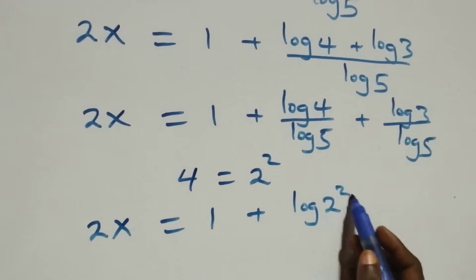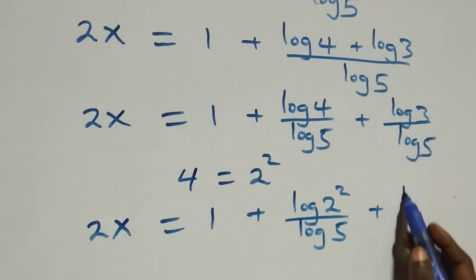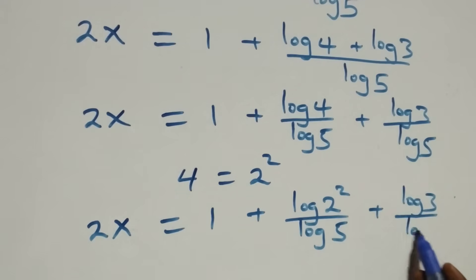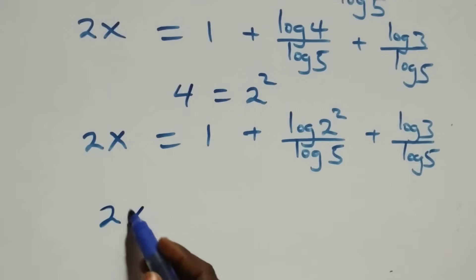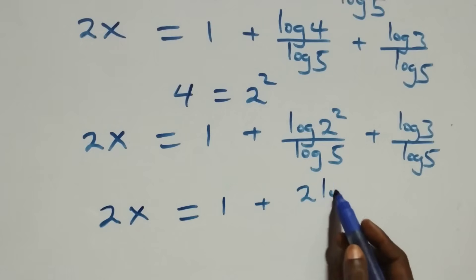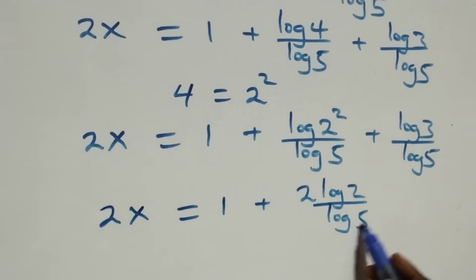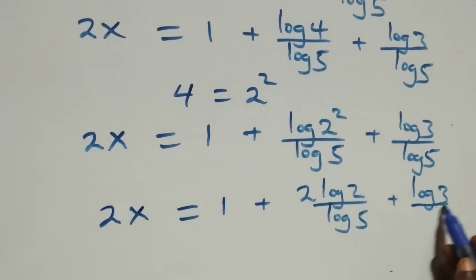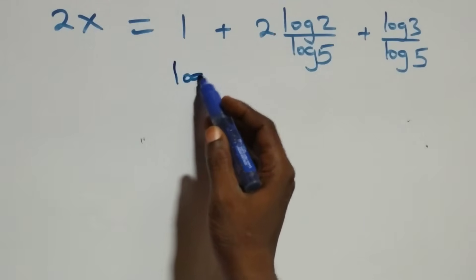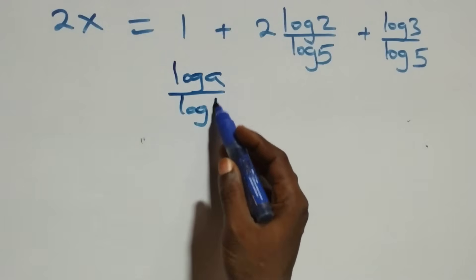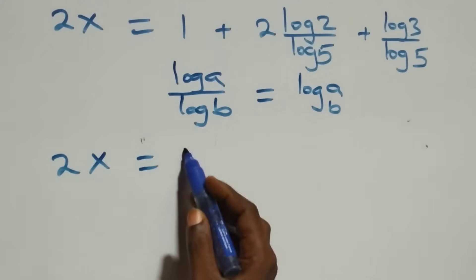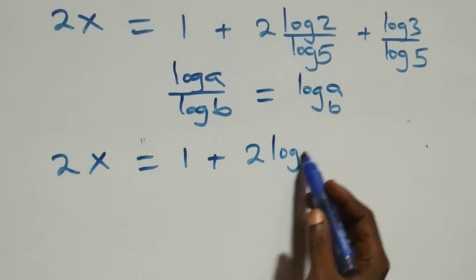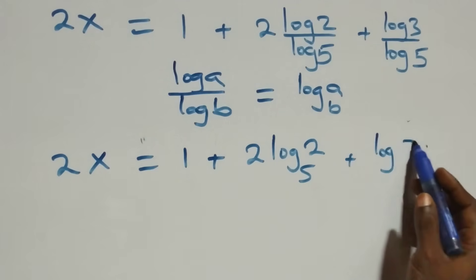Applying the power rule to log(2²) gives 2·log 2. Then we apply the change of base formula, where log a over log b is the same thing as log a to base b. So what we have becomes 2x equals 1 plus 2·log₅2 plus log₅3.